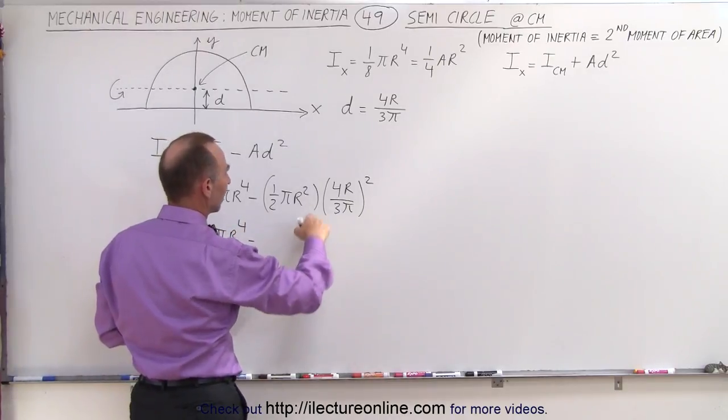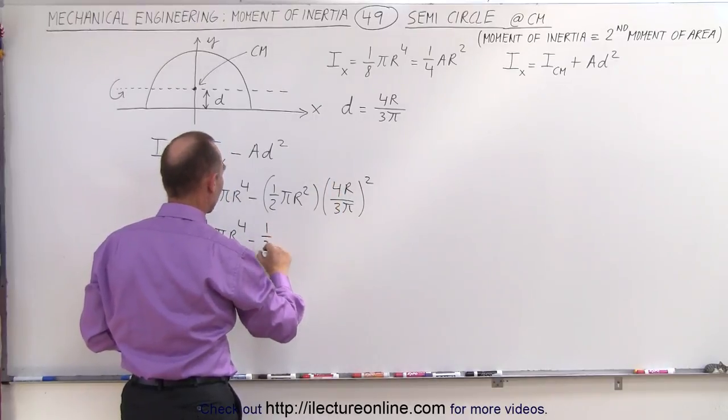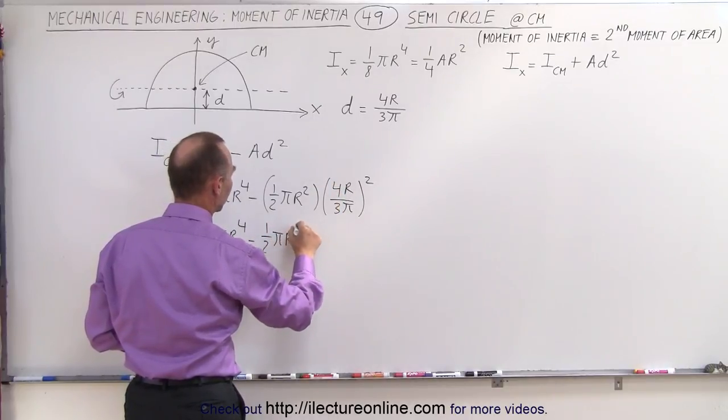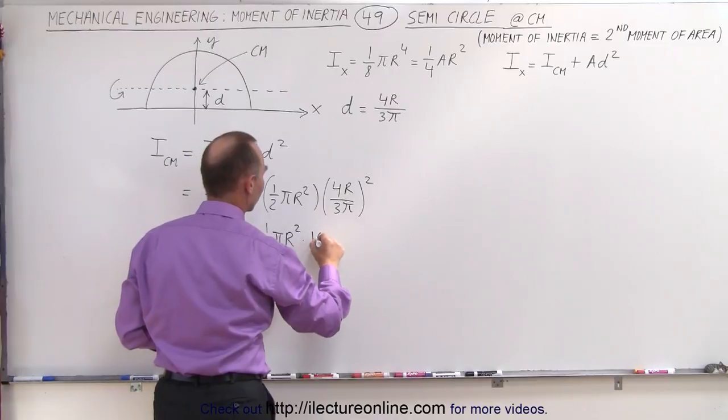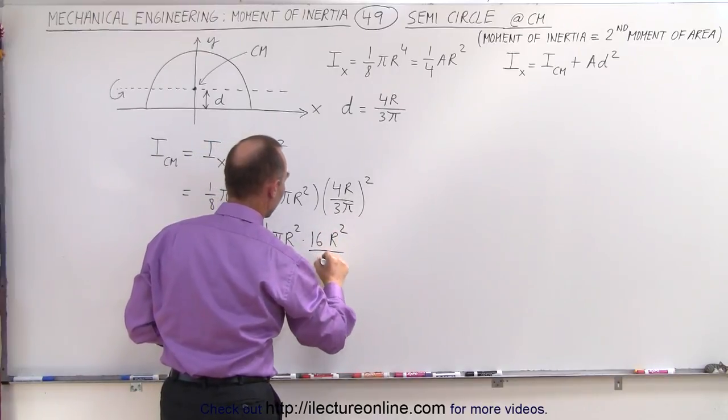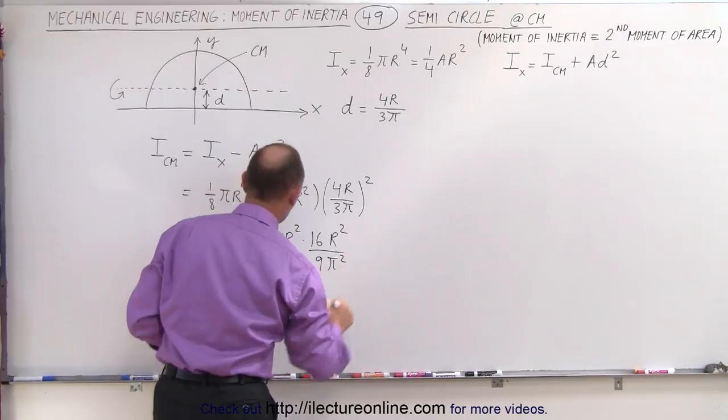Where d is equal to this, so we get 4r divided by 3 pi r to the fourth minus, let's just multiply this out. We get 1 half pi r squared times 16 r squared divided by 9 pi squared.